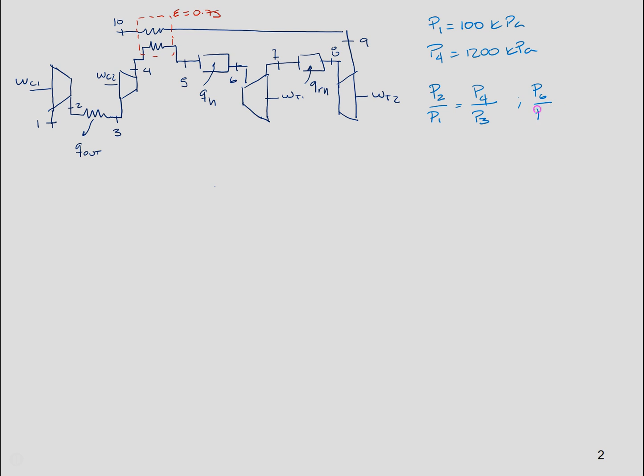And P6 over P7 should be equal to P8 over P9. If we solve this, P2 will be the square root of P1 times P4, which will be 346.4 kPa. So P2 equals P3, and should be equal to P7 and P8. Also, P1 equals P9 equals 100 kPa, and P4 equals P5 equals P6.